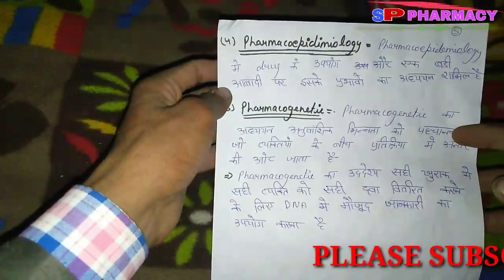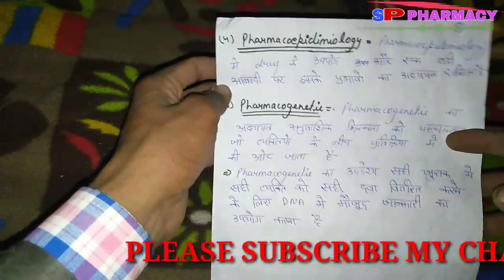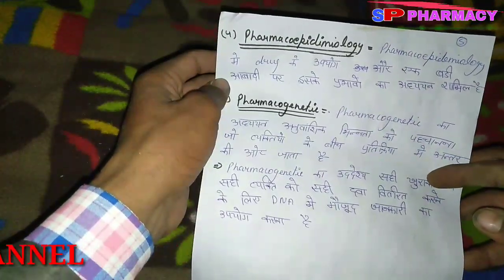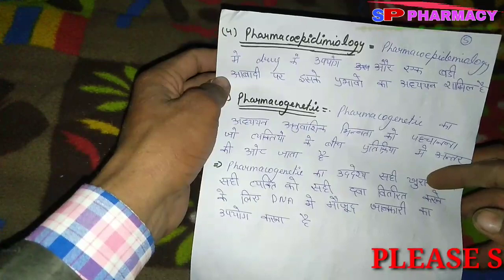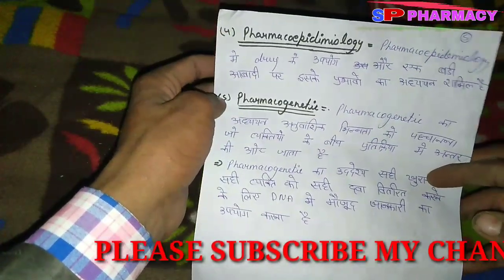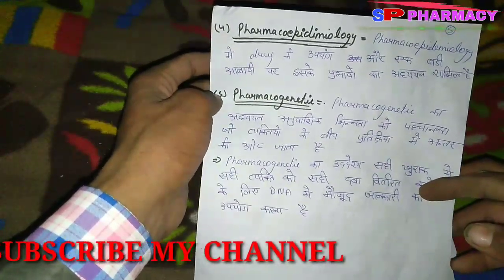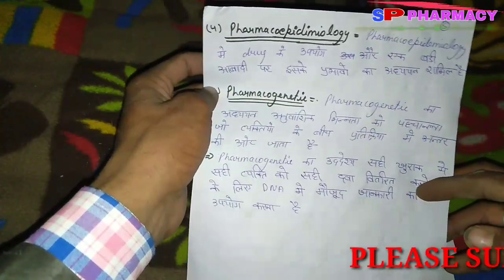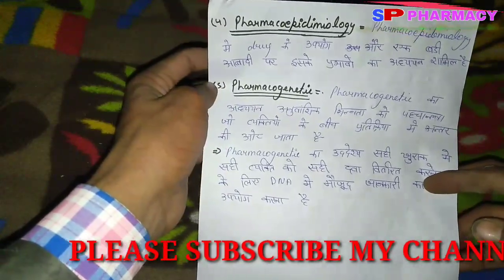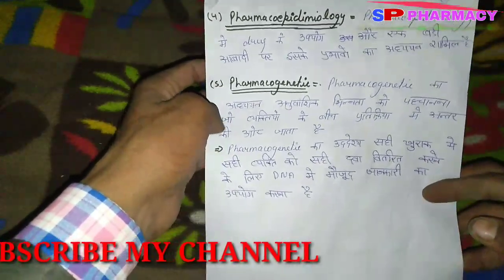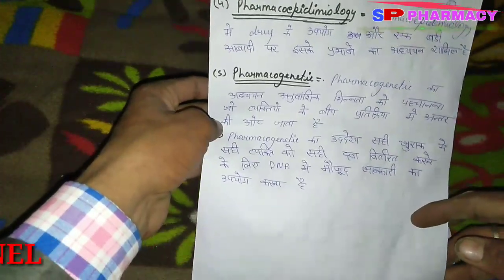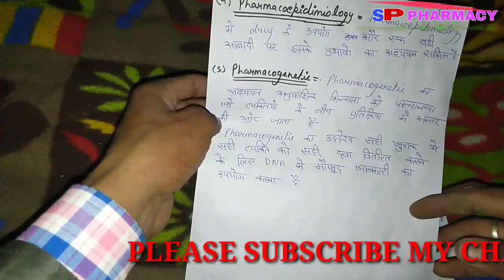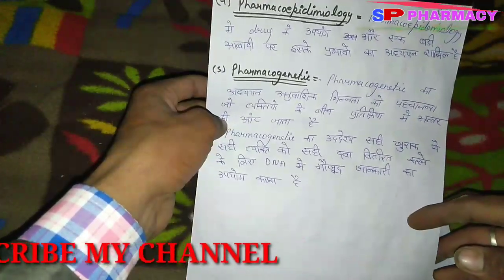चौथा point है pharmacoepidemiology — इसमें drug के उपयोग और एक बड़ी आबादी पर उसके प्रभाव का अध्ययन शामिल है। पांचवां point है pharmacogenetics — इसमें अनुवांशिक भिन्नता को पहचानना शामिल है जो व्यक्तियों के बीच प्रतिक्रिया में अंतर की ओर जाती है। इसका उद्देश्य DNA में मौजूद जानकारी का उपयोग करके सही व्यक्ति को सही खुराक में सही दवा वितरित करना है।